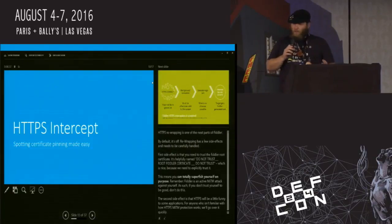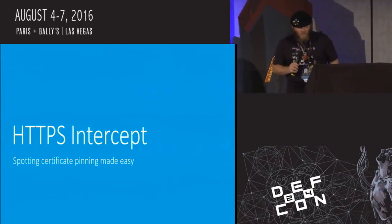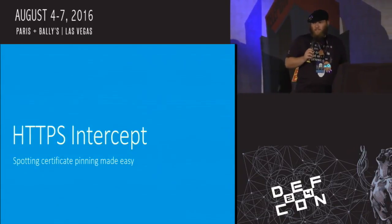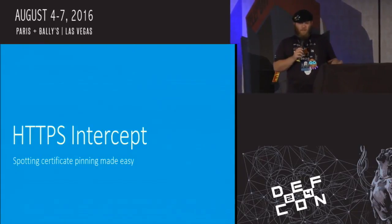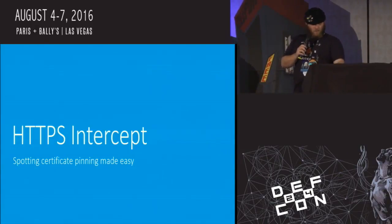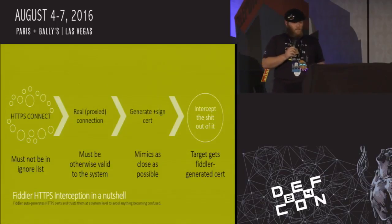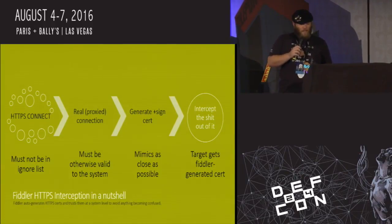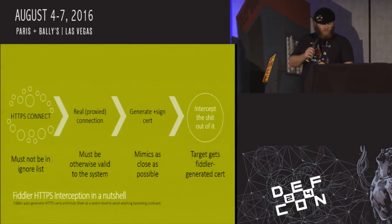Fiddler can intercept HTTPS requests. It does this by owning your system. It installs a local root certificate and will then be able to intercept calls coming in, fake out what an application like Edge or anything else is seeing. You get your normal HTTPS connect, which looks like a tunnel to the proxy. It goes and tries to make a real connection, then mimics as close as possible a fake cert that it owns, and then intercepts the hell out of it. This is a great way to spot cert pinning.